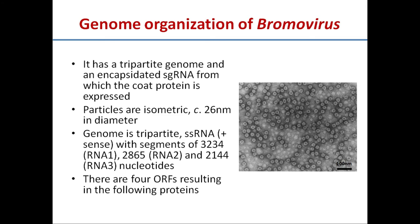Now the genome organization of bromovirus — a polyhedral or icosahedral virus. The bromovirus genus has a tripartite genome and an encapsidated subgenomic RNA from which coat protein is expressed. Particles are isometric and 26 nm in diameter. The genome is tripartite, meaning there are three RNA particles constituting the genome, all single-stranded plus-sense RNA.